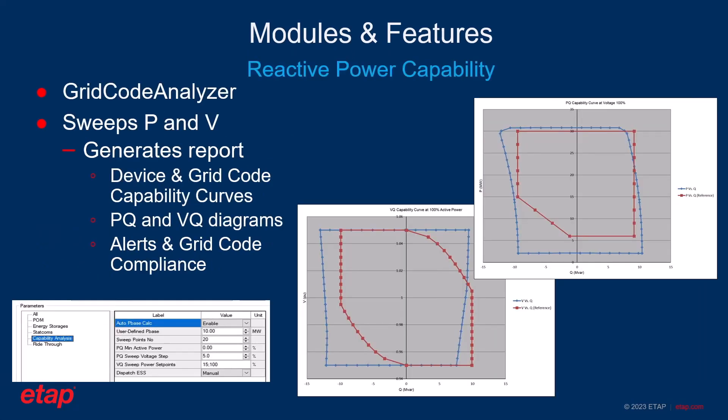In PQ studies, ETAP provides an automated sweeping structure for active power, reactive power, and voltage, and generates results based on sequential load flow calculations in the time domain. It generates a very comprehensive report including all capability information and plant calculations. The comparison between the grid code the user has chosen and the final results is presented on an overlaying basis, meaning the power plant capability and the actual grid code requirements are plotted on the same axis so the user can easily and visually determine if the grid code is met or not.